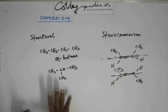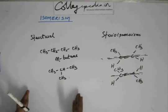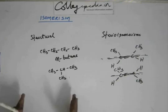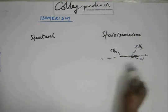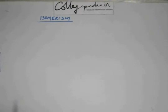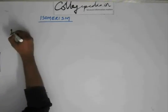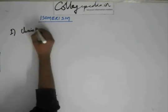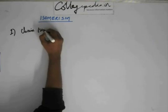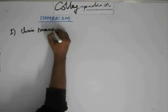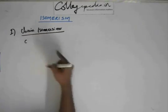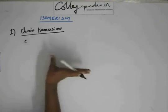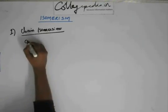Let's quickly first complete the structural isomerism part — you may already know some of this from class 10. Then we will deal with stereo isomerism. Now, there could be various kinds of structural isomerism. The first in the classification is chain isomerism. As the name suggests, the main chain — or carbon skeleton of the molecule — will be different.